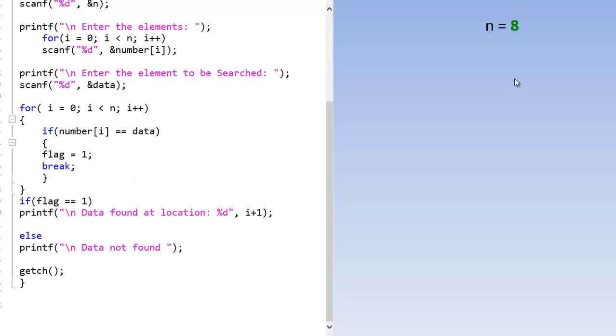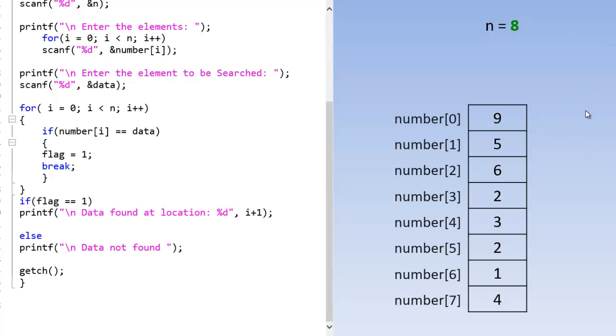So here I will say 8 for n. So I am going to input 8 values in the array. So these are my 8 values stored in the number variable which is array here. So data equals to 1. So 1 is my element which I am going to search for.